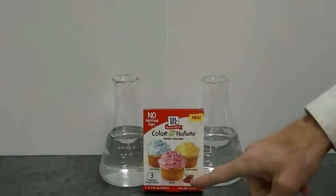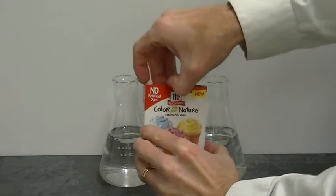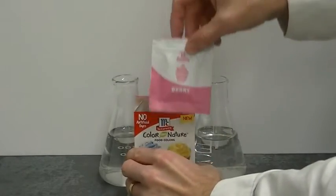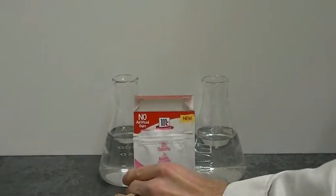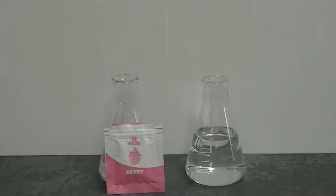Let's do some experiments with the berry dye found in Color Nature food colors. The ingredients list for the berry dye states that it contains beet juice color, and beet juice color contains a lot of the molecule betanin.